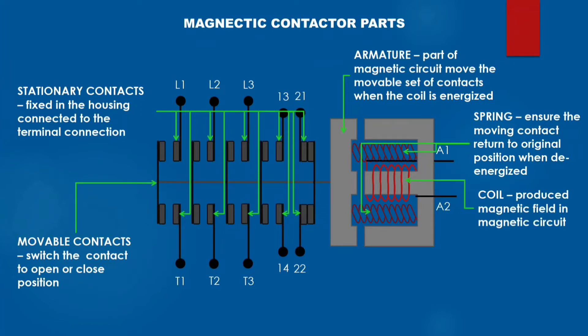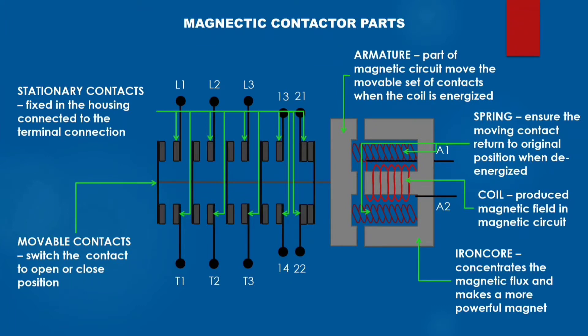The coil produces a magnetic field in the magnetic circuit. The iron core concentrates the magnetic flux and makes a more powerful magnet.